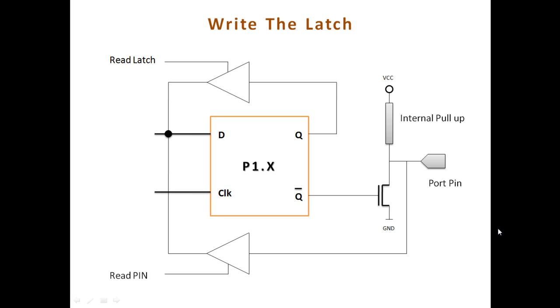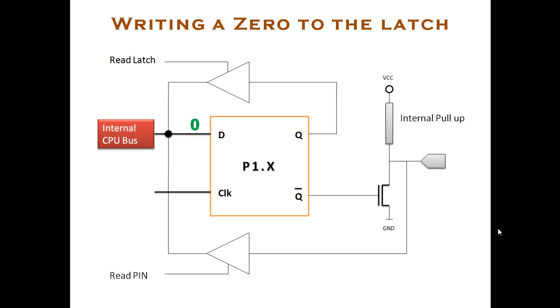Let us see how we can write onto this latch. The process of writing is fairly simple. You write the value to the D-latch through the internal CPU bus and then clock it so that the value is latched. For example, we want to write a 0 onto this D-latch, then give an input 0 through the internal CPU bus and provide a clock signal which will latch this value.